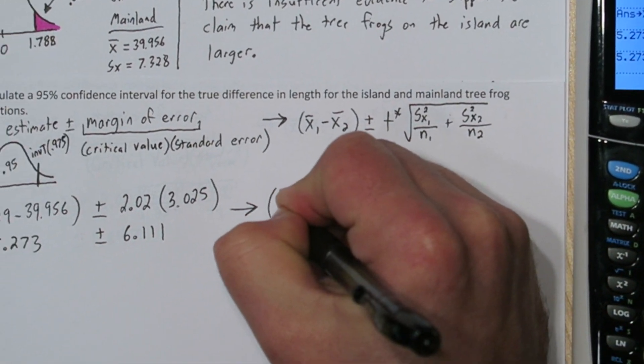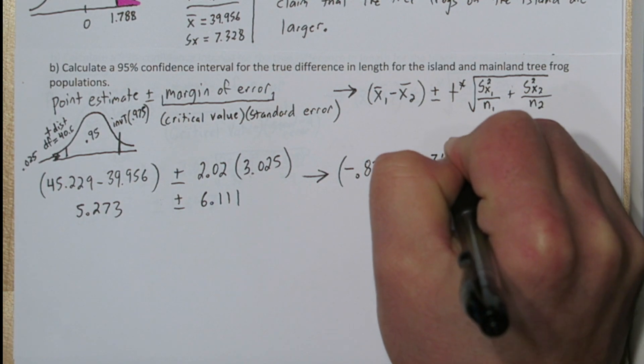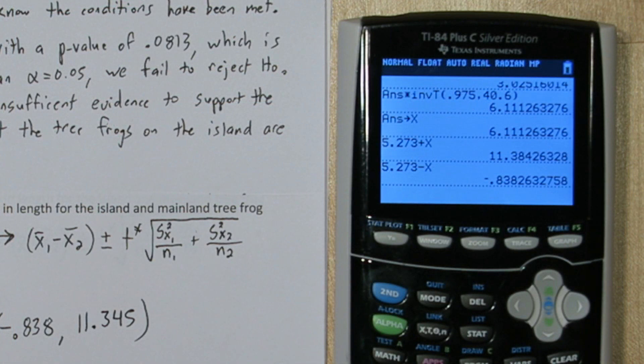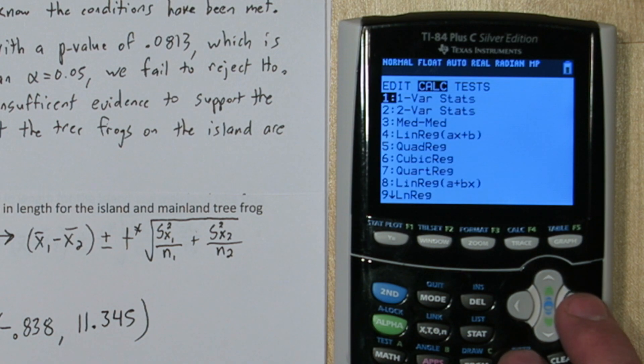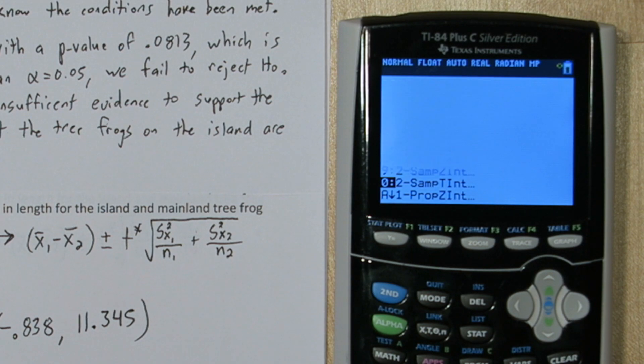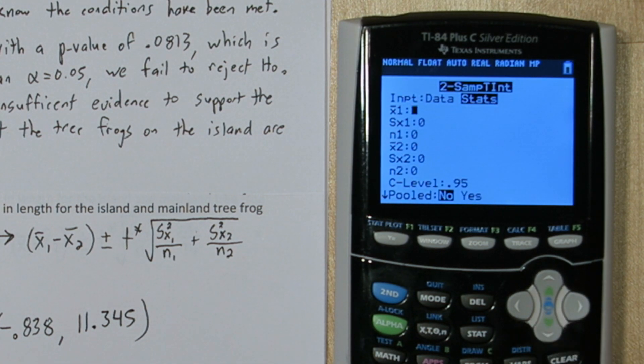Now always round the lower end of your confidence interval down and the upper end of your confidence interval up. Now on the AP exam, you don't actually have to do these calculations by hand. You can use your calculator. If you press STAT and you go over to TEST, option 0 on this calculator is 2 sample T interval. And it says do you have the original data or the summary stats? We have the summary stats. And from the computer output.